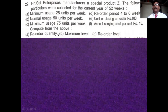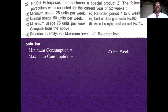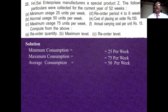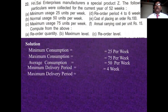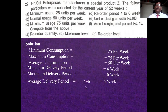Minimum consumption is 25 units per week, maximum consumption is 75 units per week, and average consumption is 50 units per week. Minimum delivery period is 4 weeks, maximum delivery period is 6 weeks, so the average delivery period is (4 + 6) / 2 = 5 weeks. All the information is in weeks.